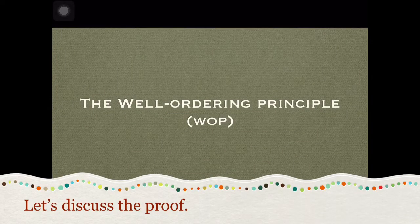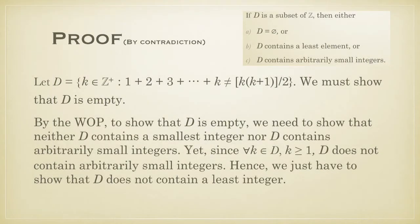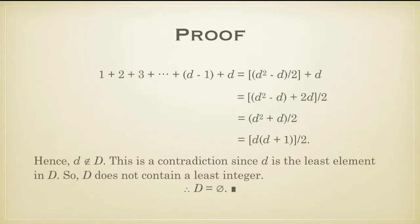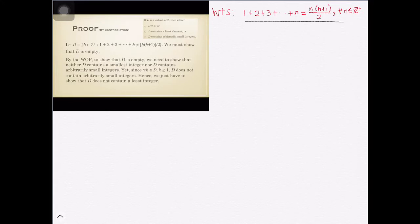Let's get started. By WOP, if we want to prove that D is empty, we should show that D does not contain a least element, and also that D does not contain arbitrarily small integers. That's why we have this statement right here. Knowing that all k in set D would start from 1 until positive infinity, it would mean that D does not contain arbitrarily small integers.